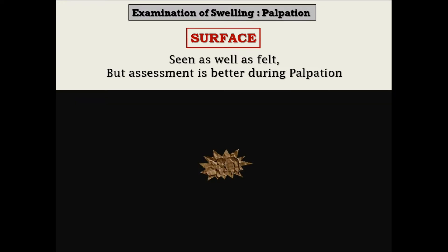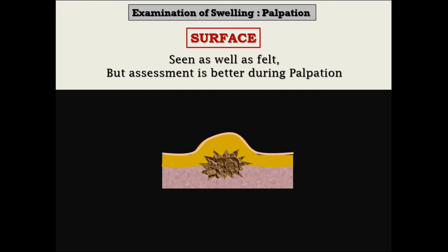Here you can see a mass with an irregular surface, looking like a malignant tumor. Now imagine it is covered by a thick layer of fat and fascia. In that case, on inspection you will see the surface as smooth — but when you do palpation, the surface will be revealed as irregular. Because of the depth and covering of the mass, the findings of inspection and palpation are different but both are correct. That is why palpation is the better method to confirm the surface of any swelling.